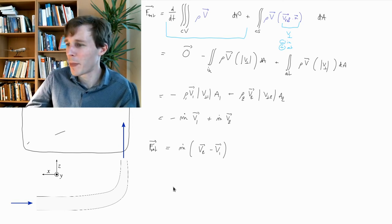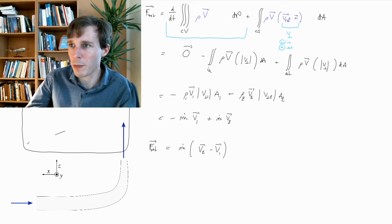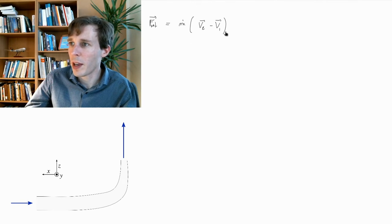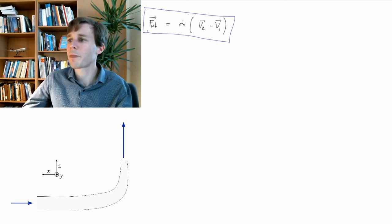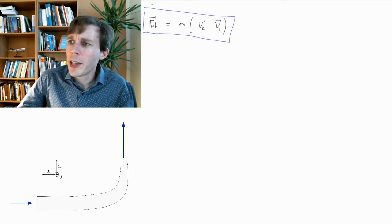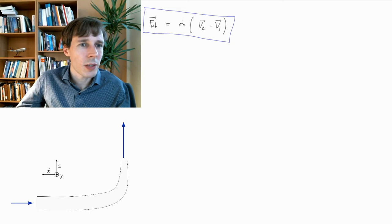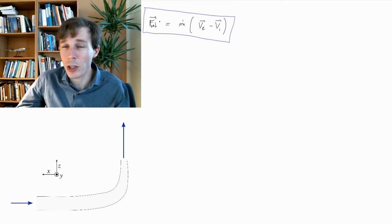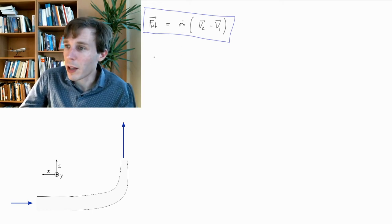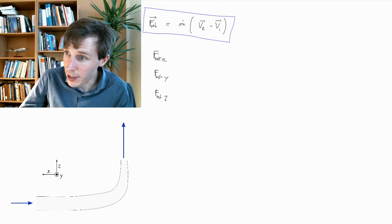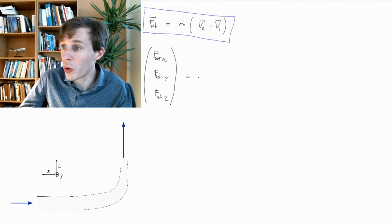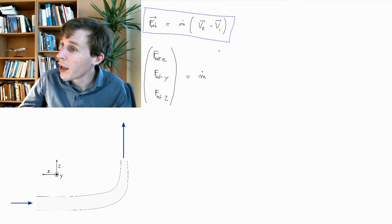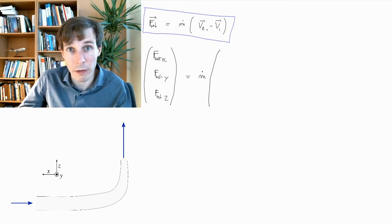Now let's solve the actual math. This vector equation on top is actually three equations, because we're in three dimensions: x, y, z. We can write f_net_x, f_net_y, f_net_z as the three components of vector f_net. This equals m_dot — the mass flow, which doesn't have three components — times the vector subtraction of v2 minus v1, which has components v2x minus v1x, v2y minus v1y, and v2z minus v1z.